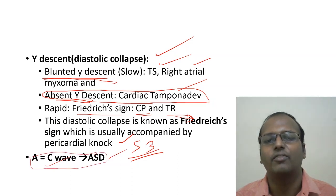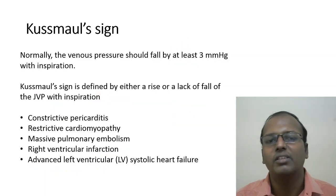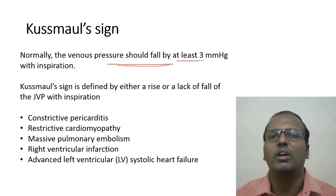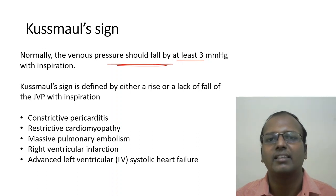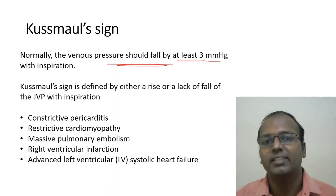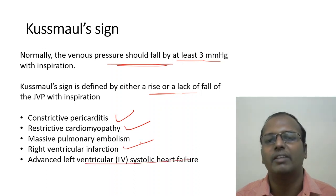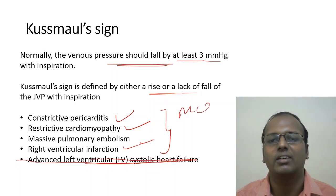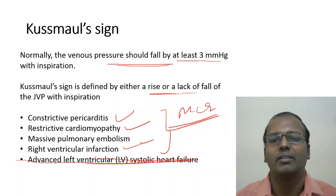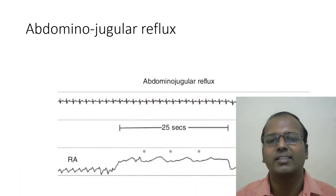Kussmaul sign: normally JVP falls by at least 3 mmHg with inspiration. Kussmaul sign is defined as either a rise or lack of fall in JVP with inspiration. It occurs in constrictive pericarditis, restrictive cardiomyopathy, pulmonary embolism, RV infarction, and advanced systolic failure. Important MCQ: Kussmaul sign never occurs in cardiac tamponade.